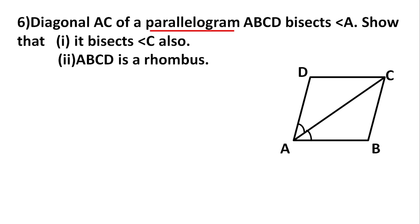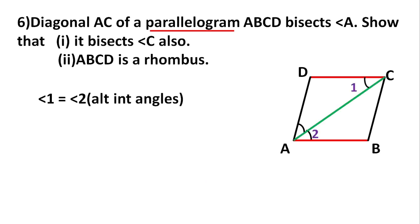In a parallelogram, opposite sides are equal and parallel. Taking sides AB and CD — they are equal and parallel, and AC is the transversal. So alternate interior angles will be equal. I mark these angles as angle 1 and angle 2, so angle 1 equals angle 2.